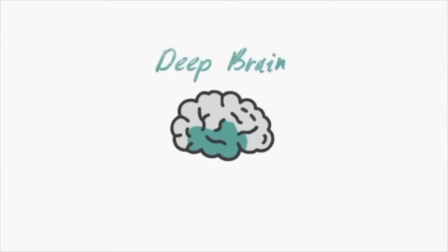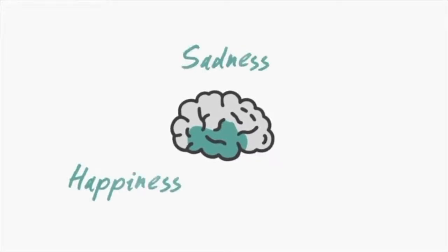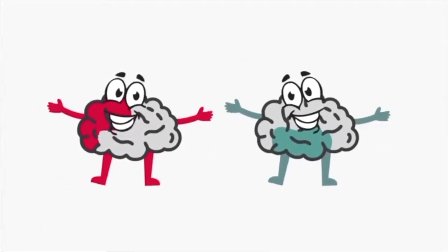The limbic system part or deep brain is where our feelings are created. This can be emotions like happiness and sadness or the good feelings we get when we do something fun, interesting or daring. The front brain and deep brain work together to help us decide what's good for us and to learn new things.